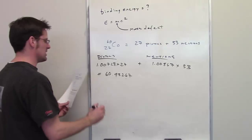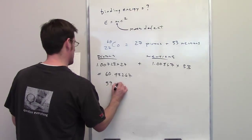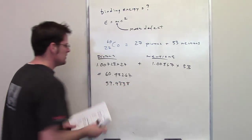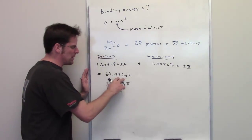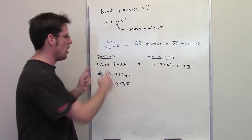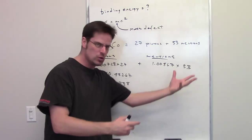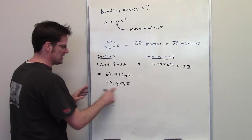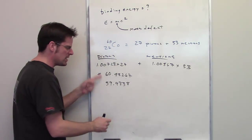Now, it tells me however that the actual mass of a cobalt-60 nucleus is 59.9338. So this is what it theoretically should be if you're just counting the weight of the protons for all the protons and the weight of the neutrons for all the neutrons. But it actually weighs this amount.